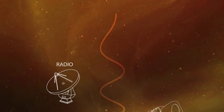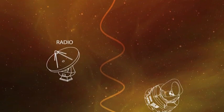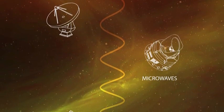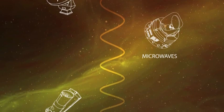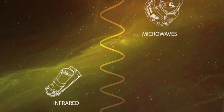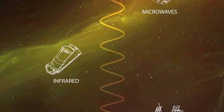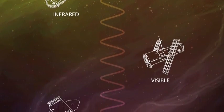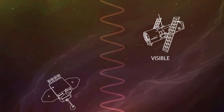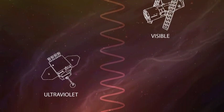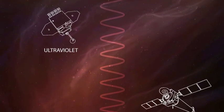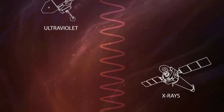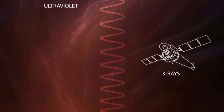What is light? The word light usually makes one think of the colors of the rainbow, or light from the sun, or a lamp. This light, however, is only one type of electromagnetic radiation.